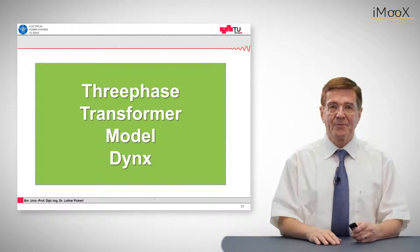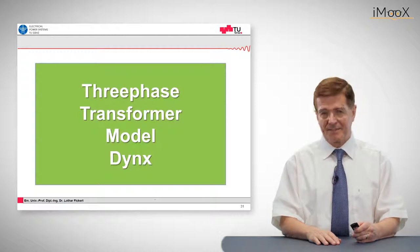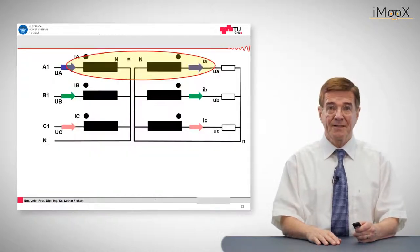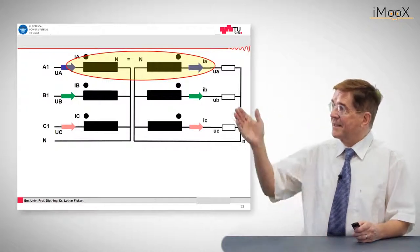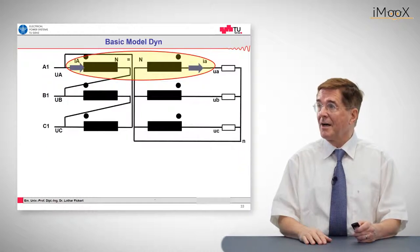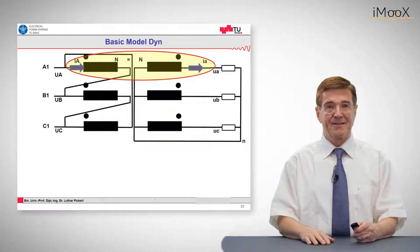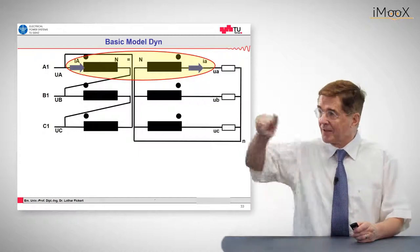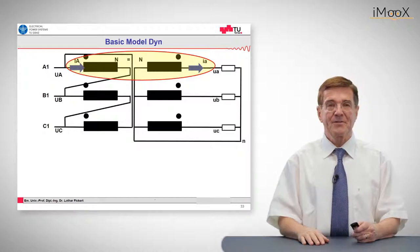Now, the next complication is the three-phase transformer model type Dyn something. D is for delta, n is for star. And now let's see how this is coming. This again is the star star transformer, the yy transformer. But now watch what happens in case of a delta transformer to the primary windings. The primary windings are connected in this z form. And let's see what happens to those currents.